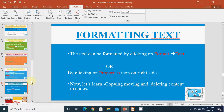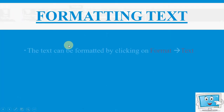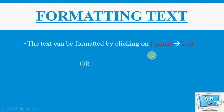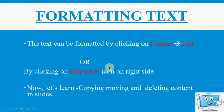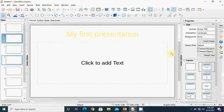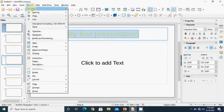After this, our next topic is formatting the text. Formatting text means changing the appearance of the text. The text can be formatted by clicking on the format menu and the text option. Another option is the properties icon on the right side of the workspace — clicking on it shows all font-related properties where you can change the font, color, size, and alignment.